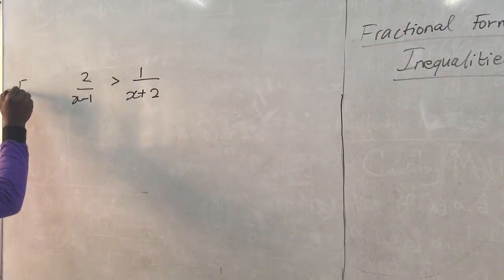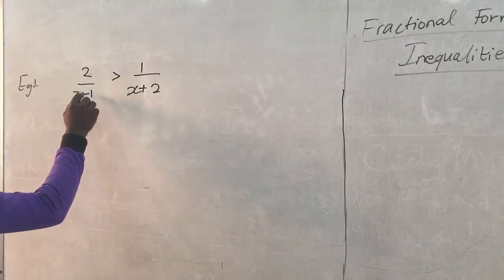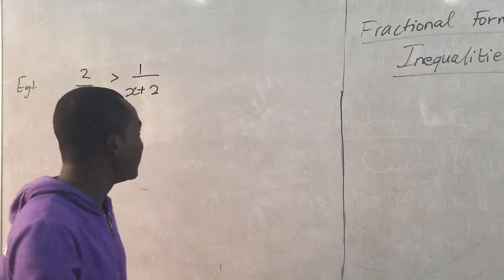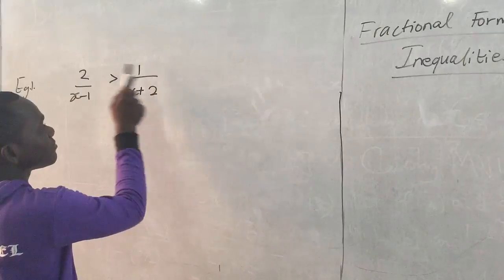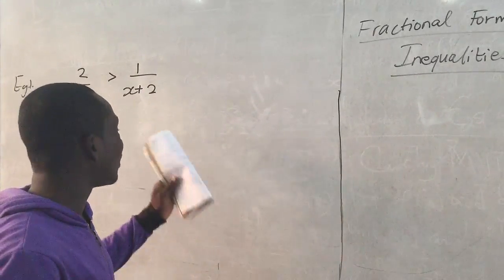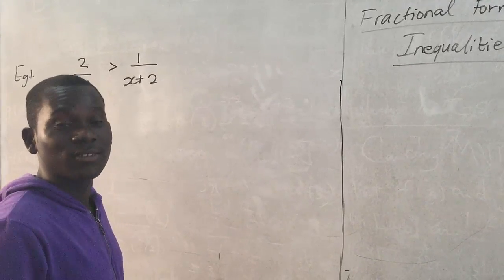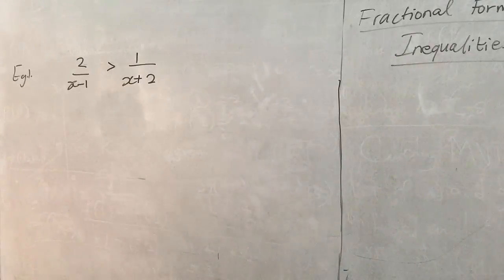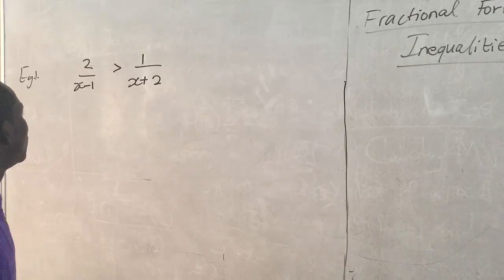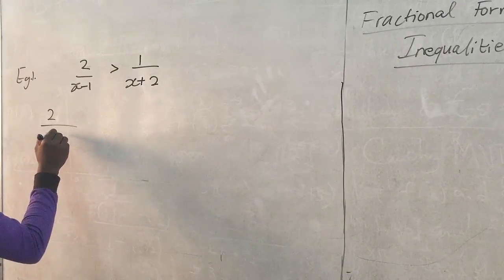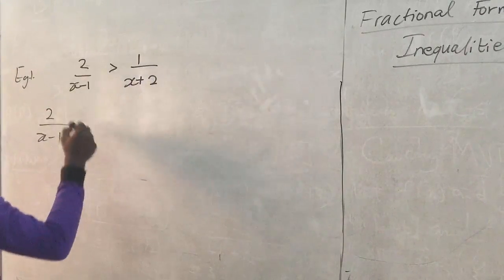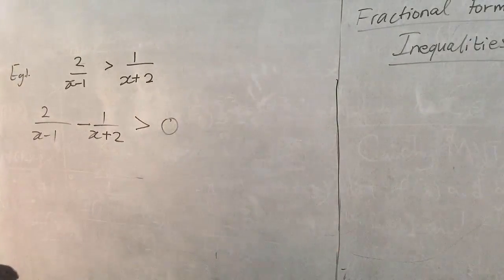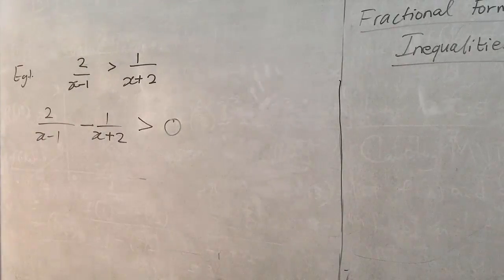Example one: we have 2 over (x minus 1) greater than 1 over (x plus 2). Please don't just go ahead finding the LCM for these two denominators and trying to multiply each side of the inequality sign by that LCM — you'll actually get a wrong solution. The first step is to make sure all the expressions are kept on the left-hand side of the inequality sign. So we bring the expression over, giving us 2/(x−1) minus 1/(x+2) greater than zero.